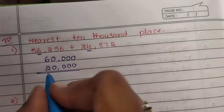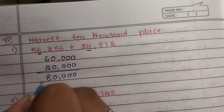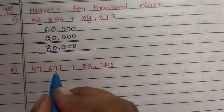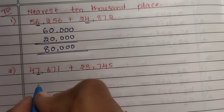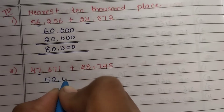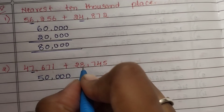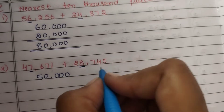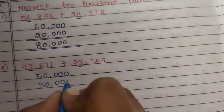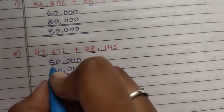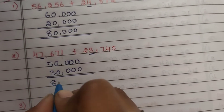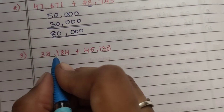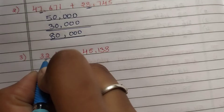6 plus 2 is 8, so the answer is 80,000. Second question: 47,671. The digit 7 is greater than 5, so we estimate it as 50,000. For 28,745, the digit 8 is also greater than 5, so we estimate it as 30,000. Add them: 5 plus 3 is 8, so 80,000.